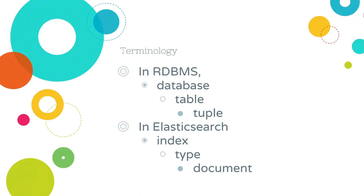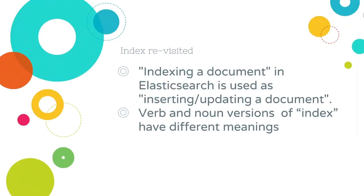In Relational Database Management Systems, we have a database, tables inside the database, and tuples inside the table. In Elasticsearch, we have an index, types inside the index, and documents inside the type. So roughly, a database is like an index, a table is like a type, and a tuple is like a document. Note that indexing a document in Elasticsearch is used to mean inserting or updating a document — so the verb and noun versions have different meanings.